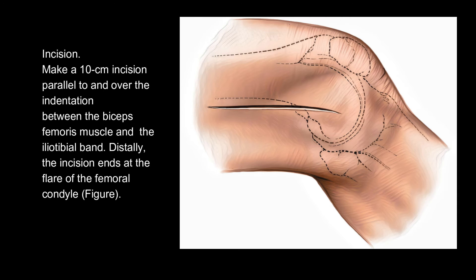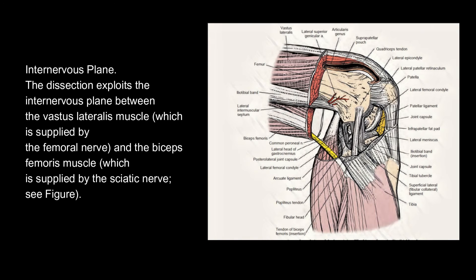Incision: make a 10-centimeter incision parallel to and over the indentation between the biceps femoris muscle and the iliotibial band. Distally, the incision ends at the flare of the femoral condyle.